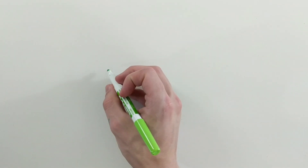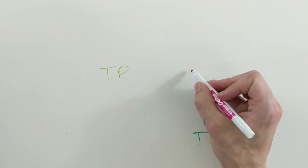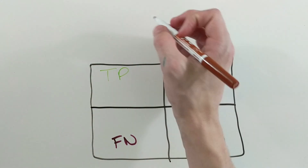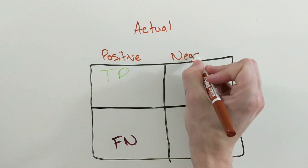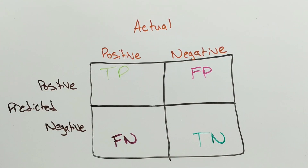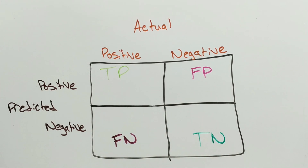Last week, when drawing a confusion matrix, I mixed up all the locations of where true positives, true negatives, false positives, and false negatives go on the confusion matrix. In reality, a confusion matrix looks like this. But how do you read it? There are four boxes that correspond to the number of examples where your predicted value matches the actual value, or not, depending on the square.